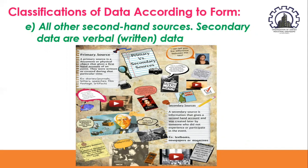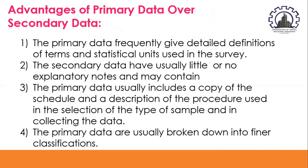Now, the secondary data are considered verbal or written data. The advantages of primary data over secondary data: first, primary data frequently give detailed definitions of terms and statistical units used in the survey. Second, secondary data have usually little or no explanatory notes and may contain clerical and typographical mistakes.